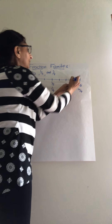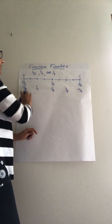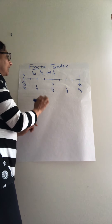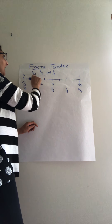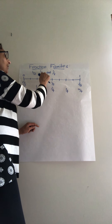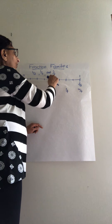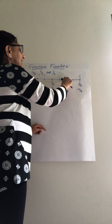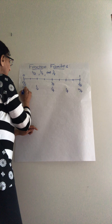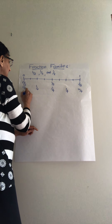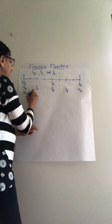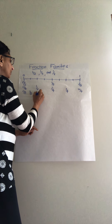Now we are going to cut each fourth into half again. Half of a fourth gives eighths, because now we have eight equal parts: one, two, three, four, five, six, seven, and eight.